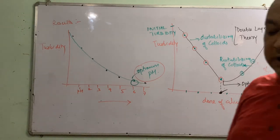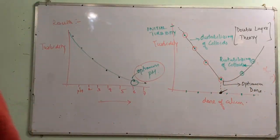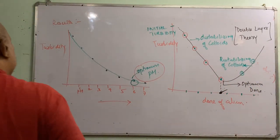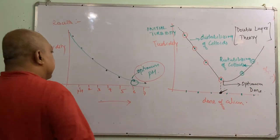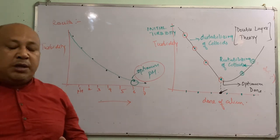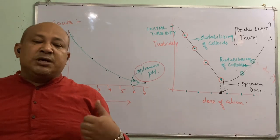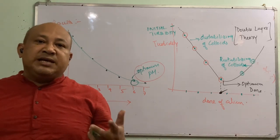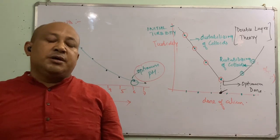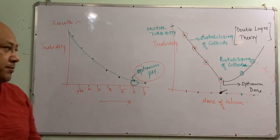This is about turbidity, coagulation, and the jar test, specially meant for practical classes. The next class will be on pH, alkalinity, acidity, and related parameters. Thank you for today.